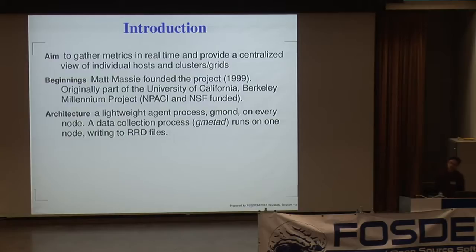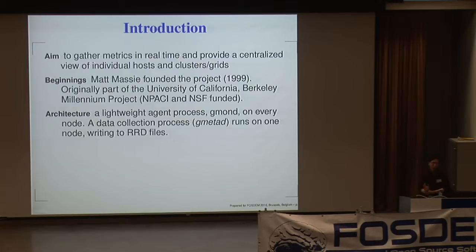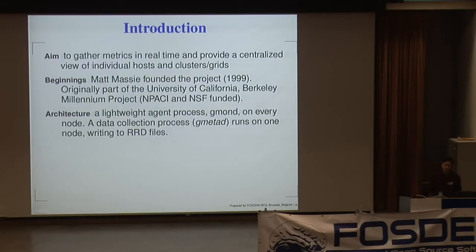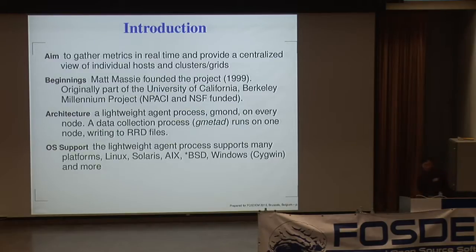Basically, you have a monitoring daemon called gmond, and you run it on every node. All the metrics collected on each host are aggregated on a separate server that runs the gmetad daemon. These metrics are stored into round-robin database files — RRD files, which are time-sliced data. This is good for storing metric data so you can go back in time and look at what your system has been doing. The agent supports most Unix and Linux systems, and even Windows via Cygwin.